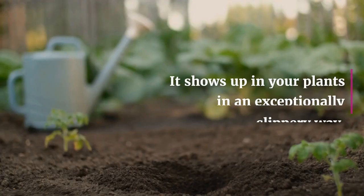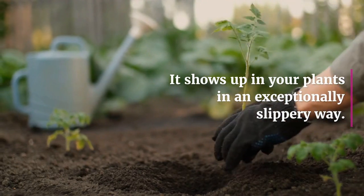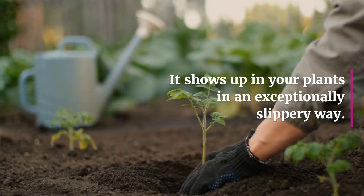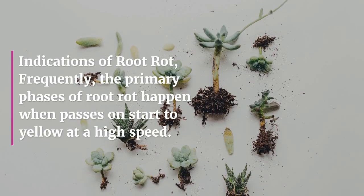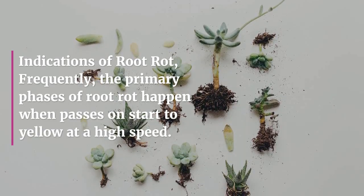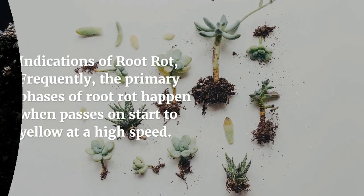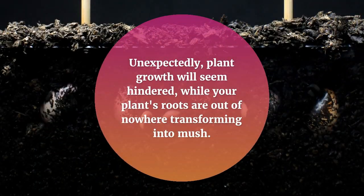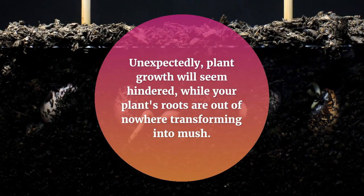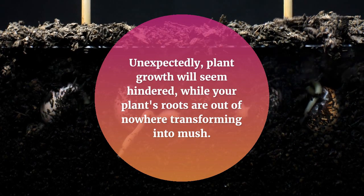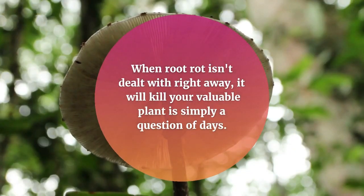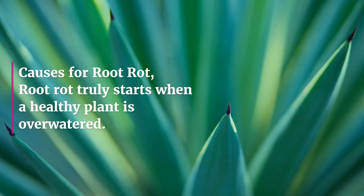Perhaps the most widely recognized issue gardeners face is root rot. It shows up in plants in an exceptionally slippery way. Indications include leaves beginning to yellow at a high speed, unexpectedly hindered plant growth, and roots suddenly transforming into mush. When root rot isn't dealt with right away, it will kill your plant in just a matter of days.